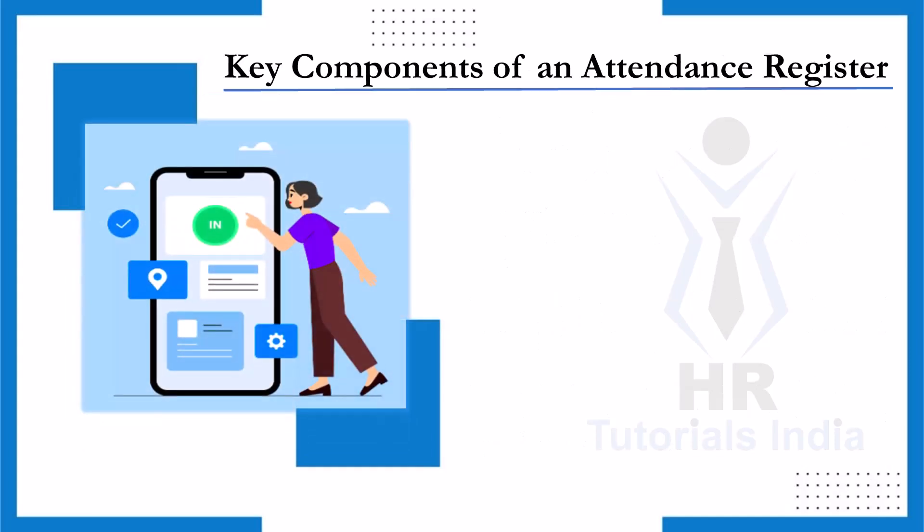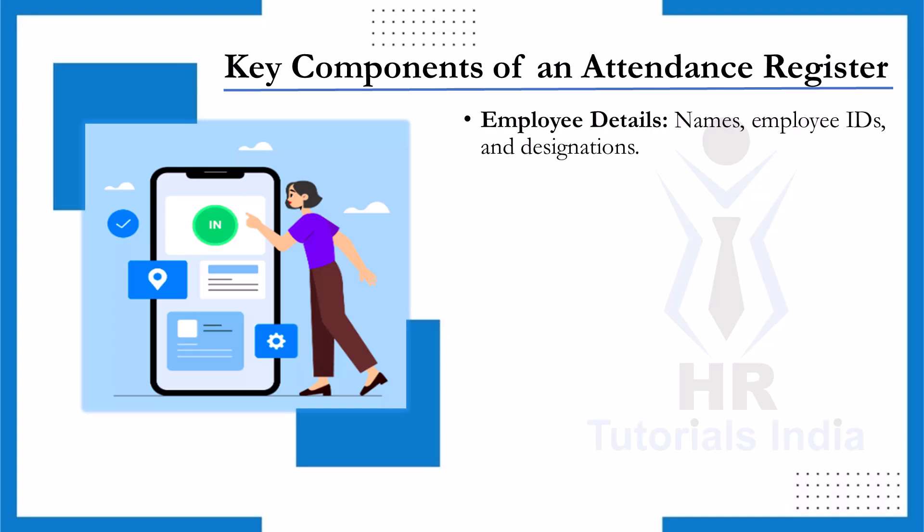Key components of an attendance register: Let's break down the key components. These elements are essential for making the register detailed, organized, and effective. Employee details: Start with the basics — the name of the employees, their unique IDs, and their designations. This ensures each record is linked to the right individual, avoiding any confusion.